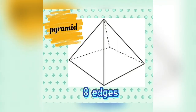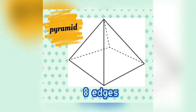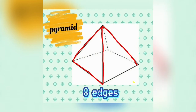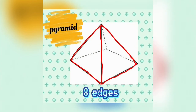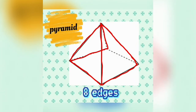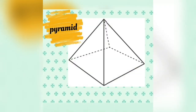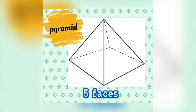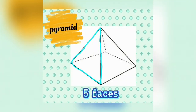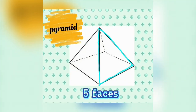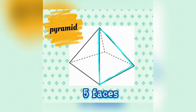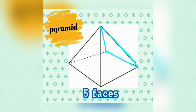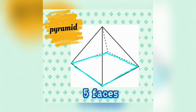Pyramid. It has eight edges — one, two, three, four, five, six, seven, eight. It has five faces — one, two, three, four, five.